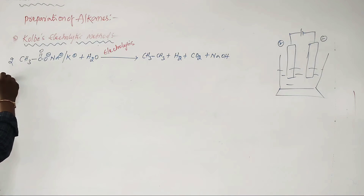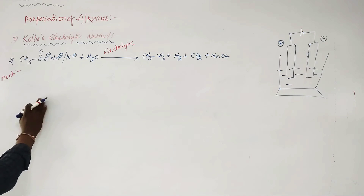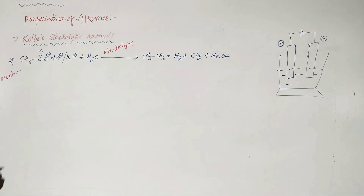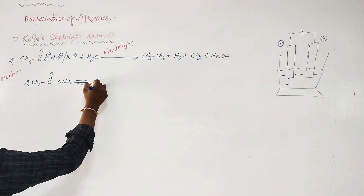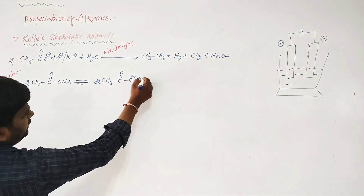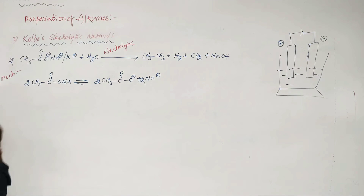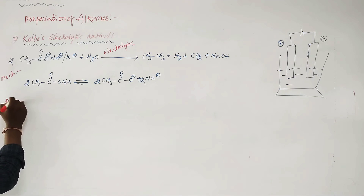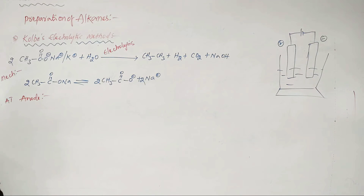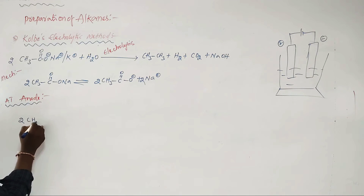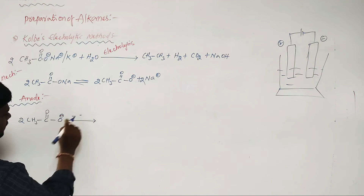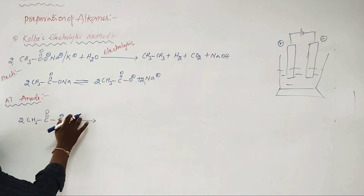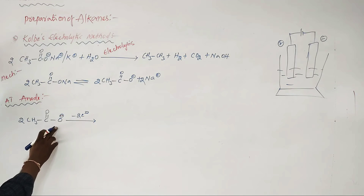The mechanism involves both anode and cathode reactions. First, CH3COONa dissociates to give CH3COO⁻ (acetate ion) plus Na⁺. At the anode: 2 moles of CH3COO⁻ lose 2 electrons total — one electron is removed from each acetate ion — forming 2 acetate radicals. These acetate radicals are unstable.